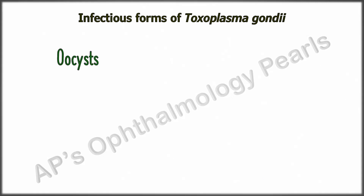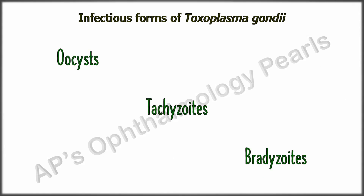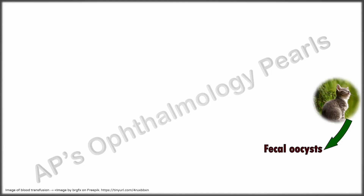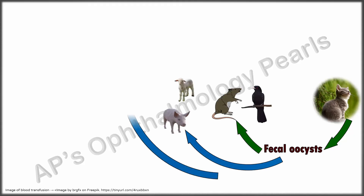There are three infectious forms of Toxoplasma gondii: oocysts, tachyzoites, and bradyzoites. In the cat, sexual reproduction results in the formation of oocysts shed in the cat's feces. Oocysts undergo sporulation in the environment, resulting in the formation of sporozoites. The sporozoite-containing oocysts are ingested by the intermediate host.